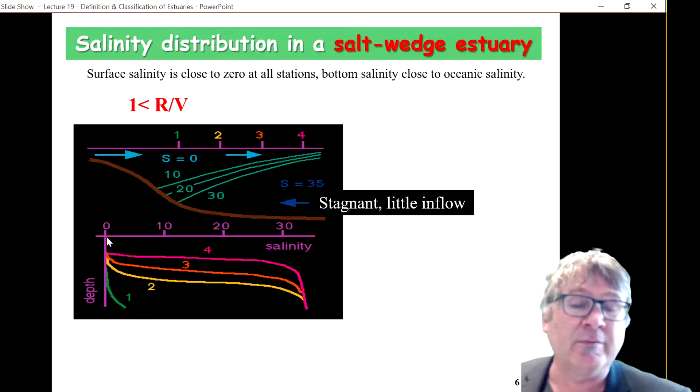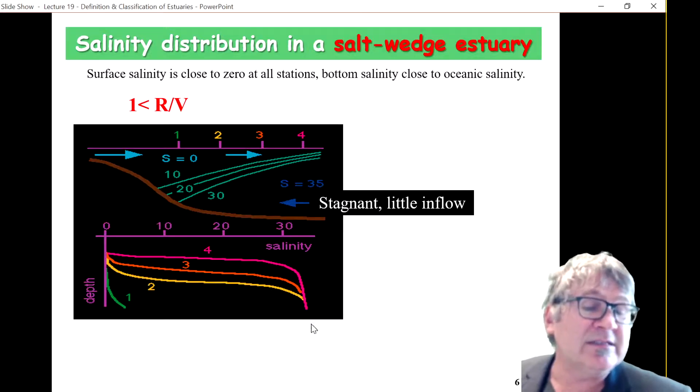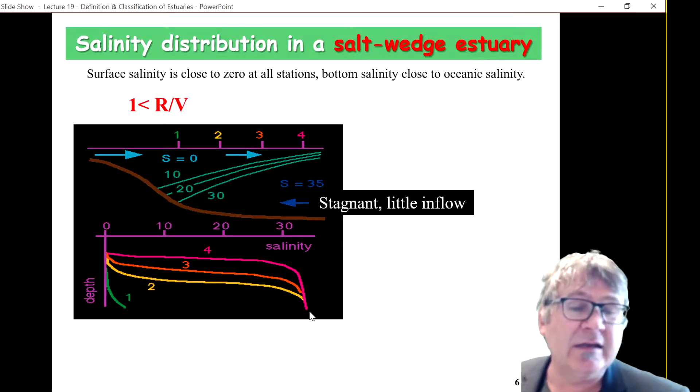You measured here station two in the bottom panel, the salinity is very low until you're sort of halfway through the water column, and then you get a big change in salinity, and then you're in the oceanic salinity, relatively high salinity.